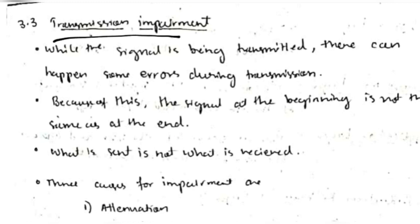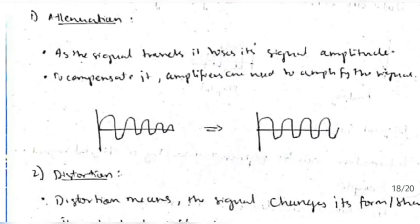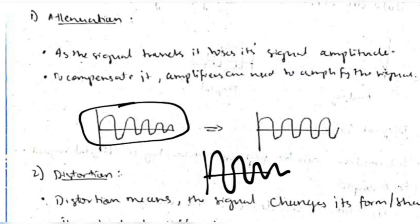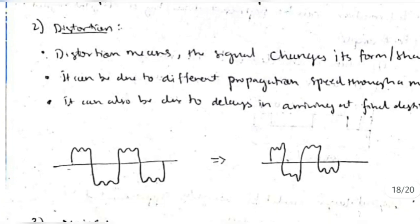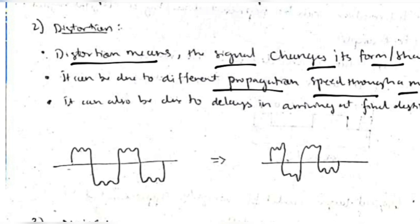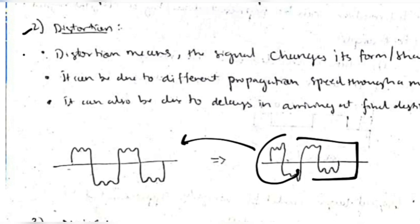Transmission impairment refers to errors that occur while transferring data from one device to another. There are three causes. First, attenuation: the signal strength reduces over distance. Amplifiers are used to keep the signal amplitude constant. Second, distortion: the shape or form of the signal changes due to different speeds through a medium or delays. Various devices are used to restore the signal to approximately its original shape.